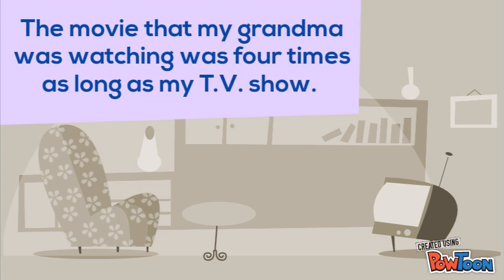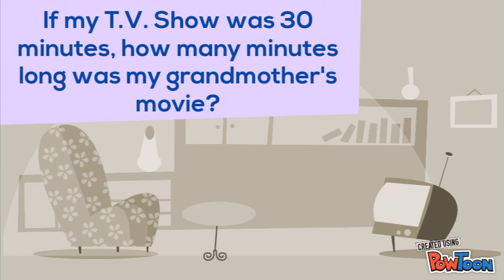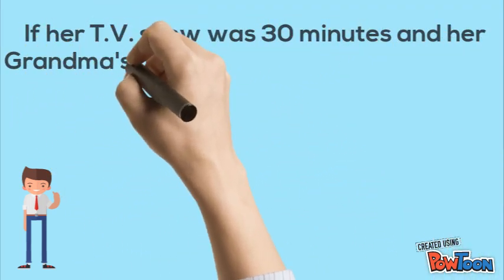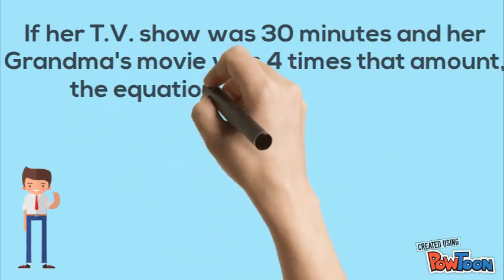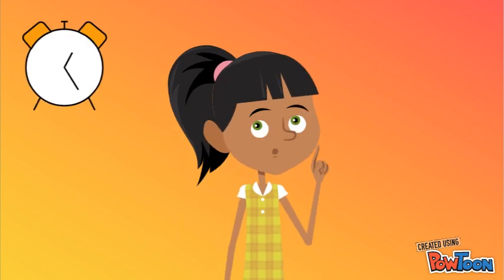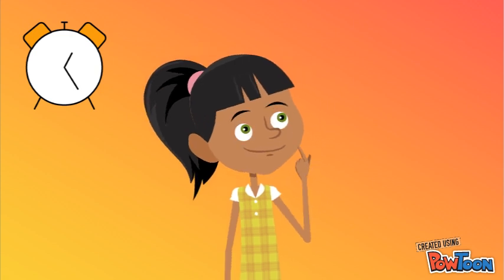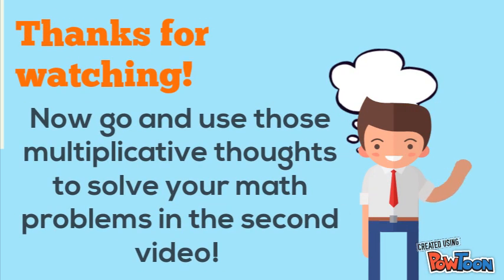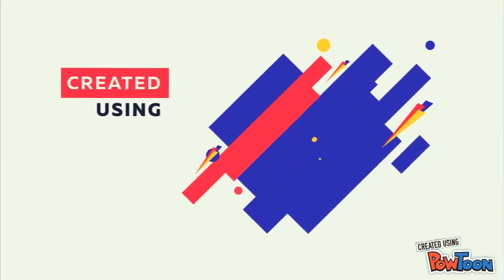The movie that my grandma was watching was four times as long as my TV show. If my TV show was 30 minutes, how many minutes long was my grandmother's movie? If her TV show was 30 minutes and her grandma's movie was four times that amount, the equation would look like this: four times 30 minutes equals the length of grandma's movie. You got it — 120 minutes, or two hours!